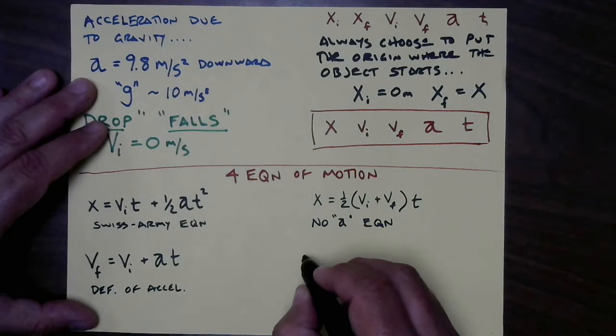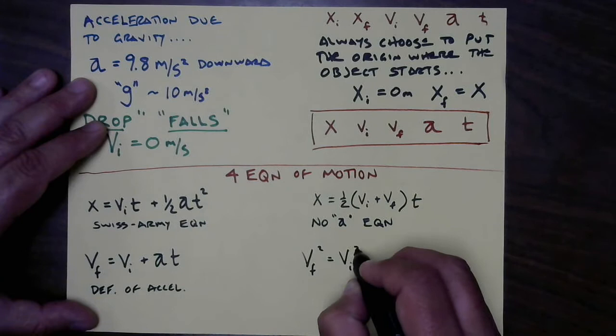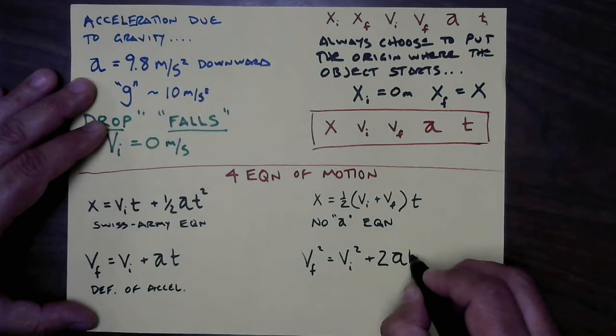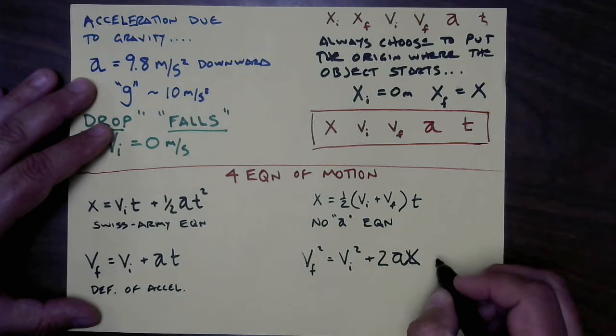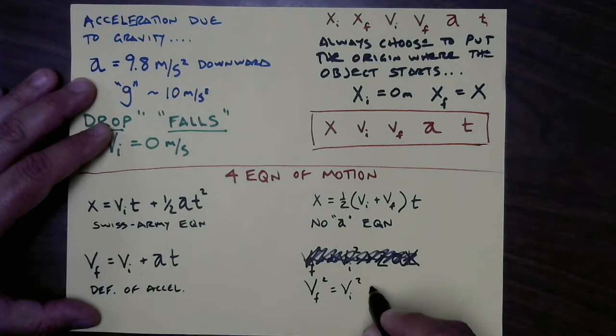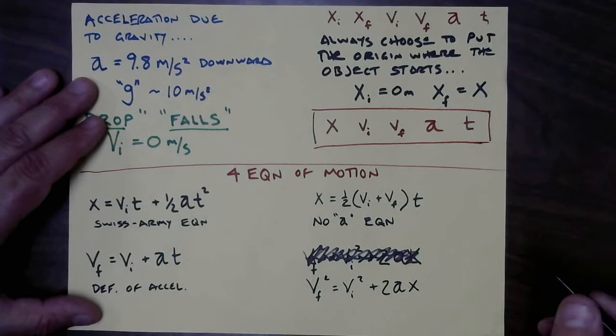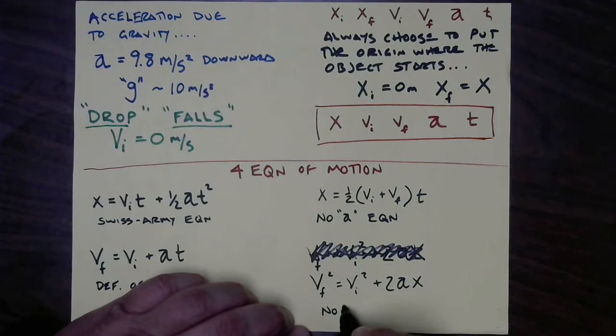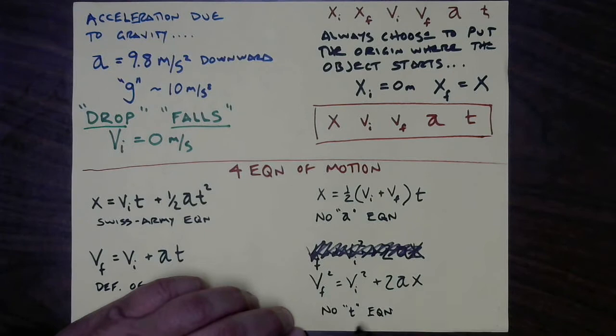Finally, the fourth equation: vf squared equals vi squared plus 2ax. I call this the 'no-t equation' because it's missing t — or you could call it 'not.' Those are the four equations of motion that you'll need to use.